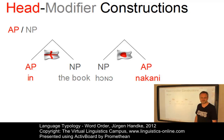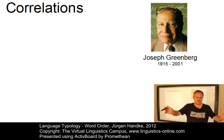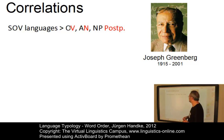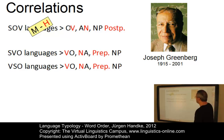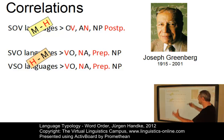Joseph Greenberg found out that there are typical correlations between the basic word order — SVO, SOV, VSO, etc. — and these head-modifier patterns. He found that SOV languages typically have modifier-head patterns, whereas languages where the verb comes first, or SVO languages, typically have head-modifier patterns. So these are the ideal correlations between basic word order and the organization of heads and modifiers.